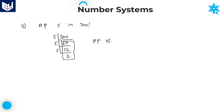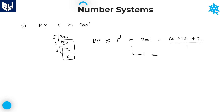Therefore, the highest power of 5 in 300 factorial is equal to the sum of all the quotients: 60 plus 12 plus 2, divided by the power of prime number. The prime number is 5 and its power is 1. Adding: 60 plus 12 is 72, plus 2 is 74. Therefore, the highest power of 5 in 300 factorial is equal to 74.